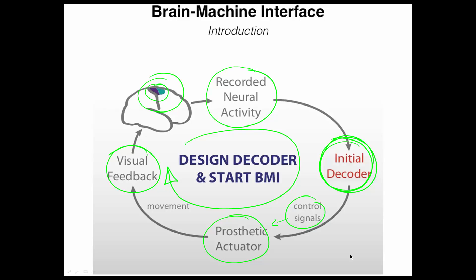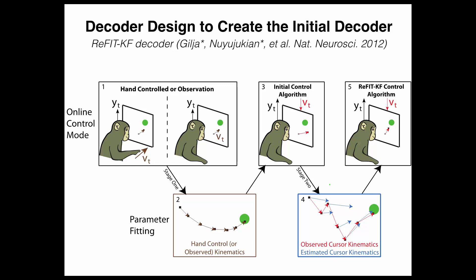Now let's take a closer look at how we can design this initial decoder. We start with an animal, in this case a rhesus monkey, making actual arm movements, which we then render on a screen as a computer cursor moving, or we can ask the monkey to sit passively while observing a cursor being moved by the computer itself. This allows us to record neural activity from the brain, Y of T, while recording the movement of the hand or the computer cursor. We can then relate these so-called kinematics, or movements, to the neural activity so as to arrive at the initial decoding algorithm.